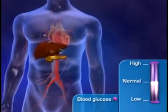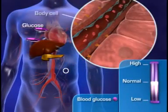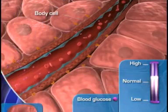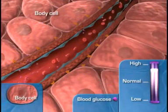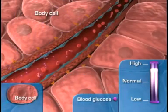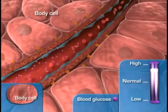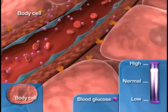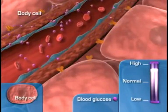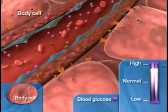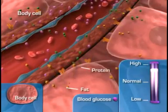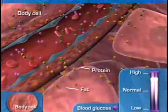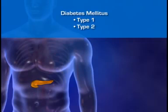With uncontrolled diabetes, glucose cannot move from the bloodstream into muscles or fat cells, leading inevitably to hyperglycemia — a blood glucose level higher than the normal fasting blood glucose level. Diabetes also leads to starvation of those cells and a subsequent increase in the breakdown of fat and protein as the cells seek alternative sources of fuel.